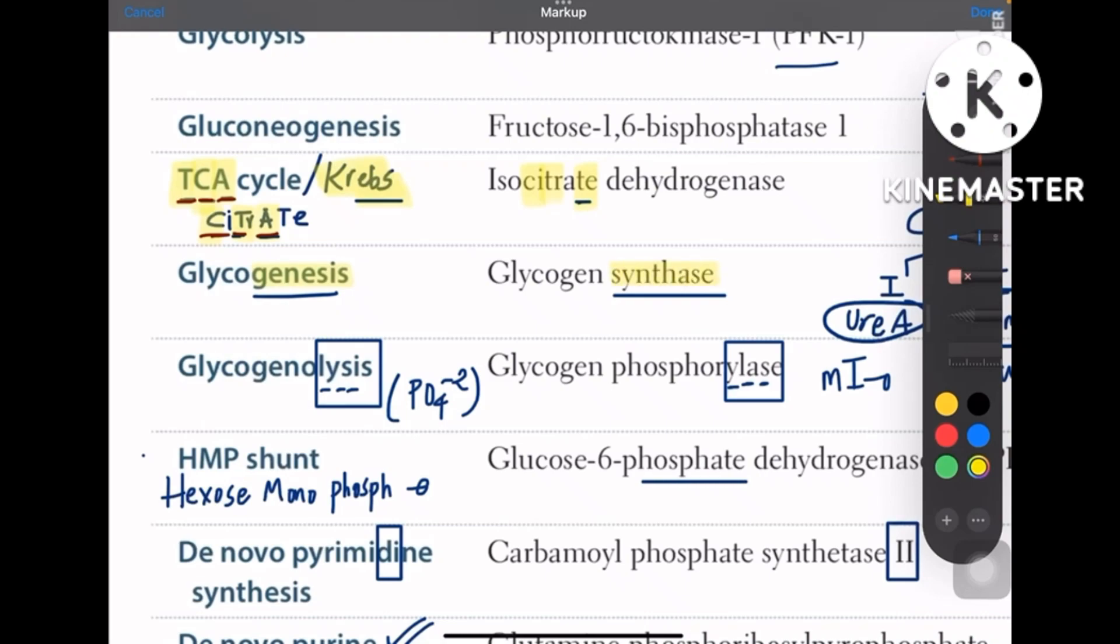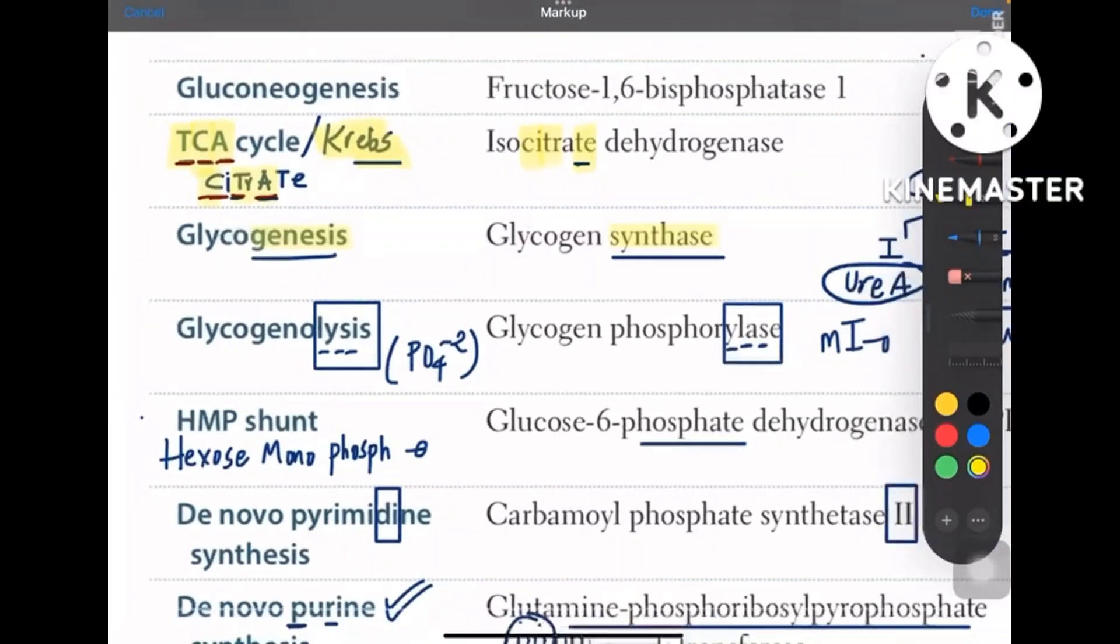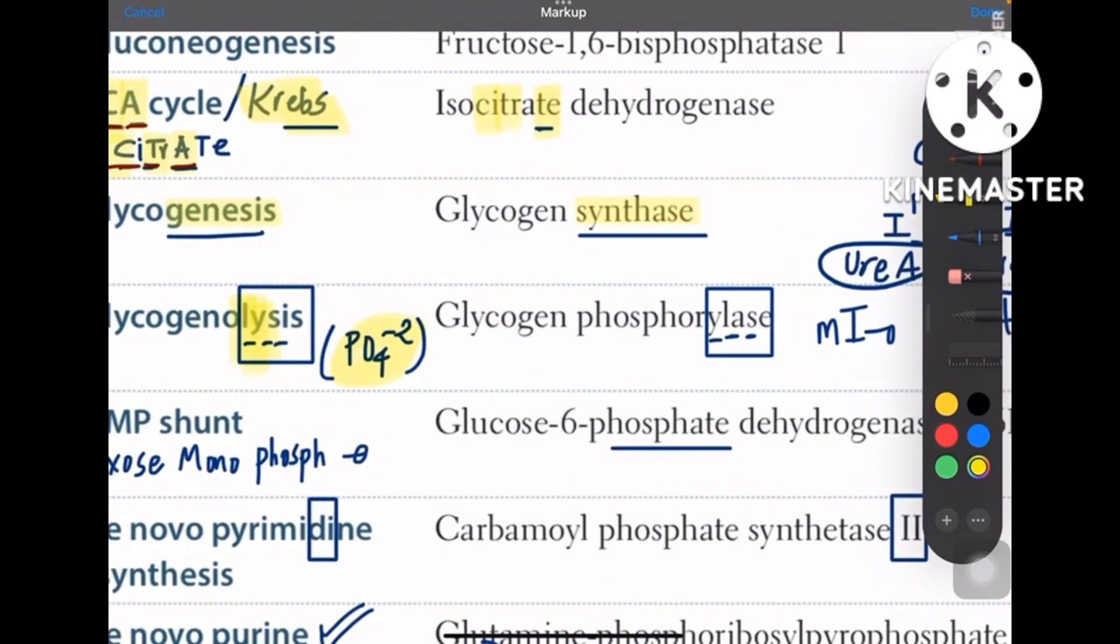In the name glycogenolysis you have L, Y, and S, right? So similarly you have glycogen phosphorylase with L, Y, and S. So that is the mnemonic for glycogenolysis.